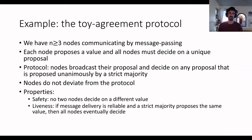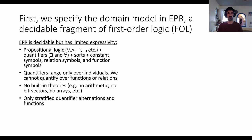This is a safety property: no two nodes decide on a different value. The protocol is not very live, because if every node proposes something different there will be no decision. But we should be able to prove that if message delivery is reliable and from the beginning a strict majority proposes the same value, then all nodes eventually decide. We now specify the domain model of our protocol in EPR, which is a decidable fragment of first-order logic.